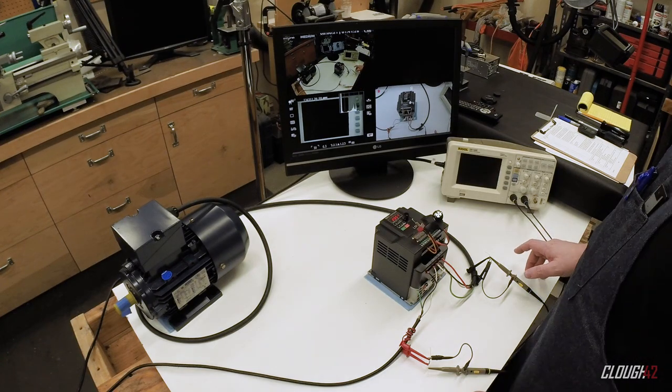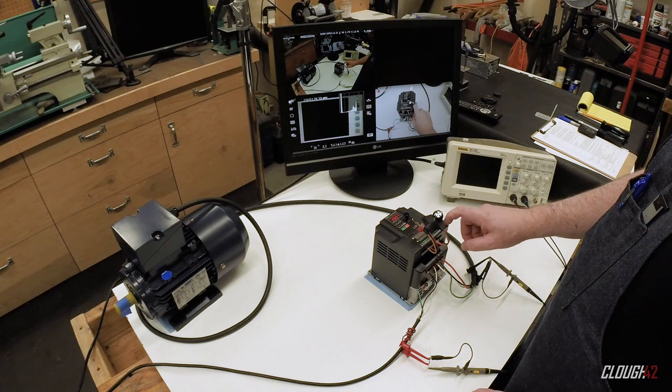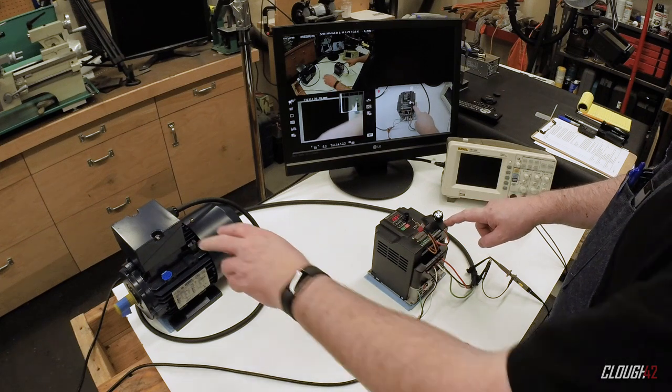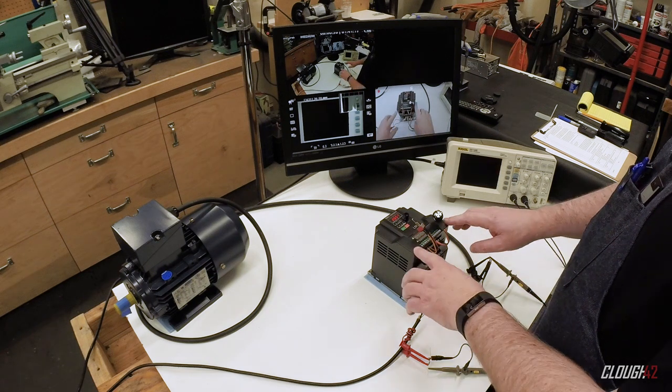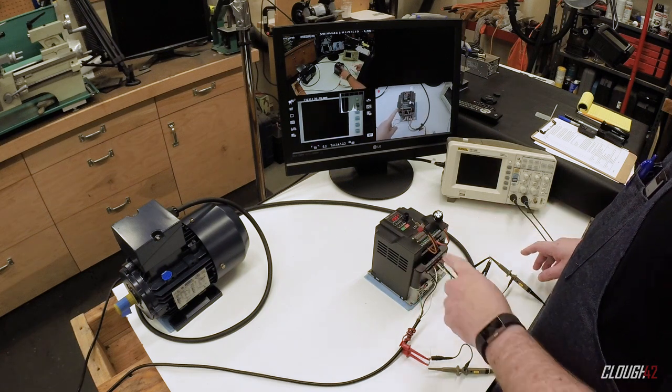This is the same setup we had last time. This is the Tico Westinghouse VFD hooked up to a one horsepower three phase motor, and this is just where we left it last time, wired up, programmed, and ready to run.